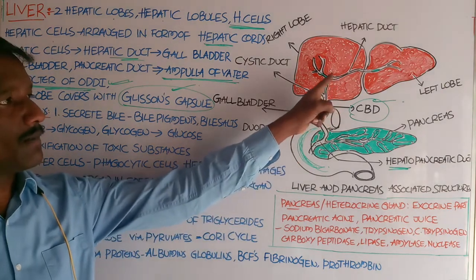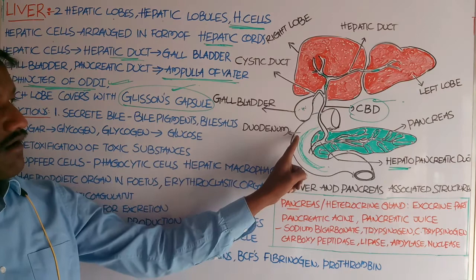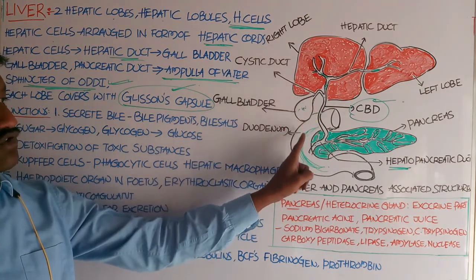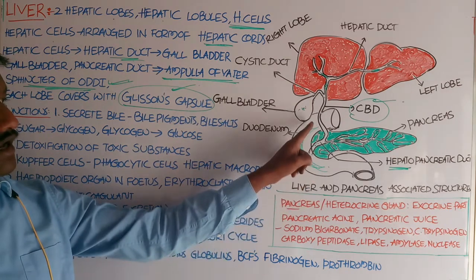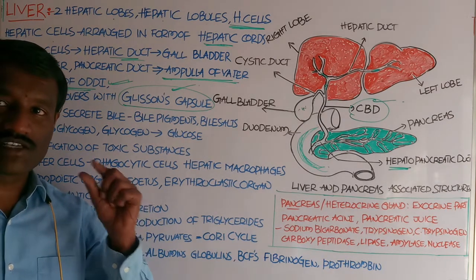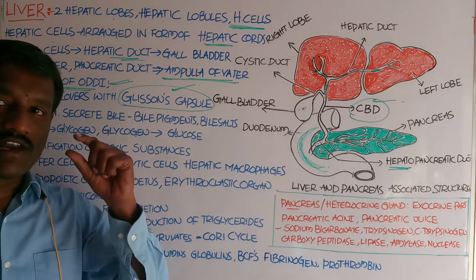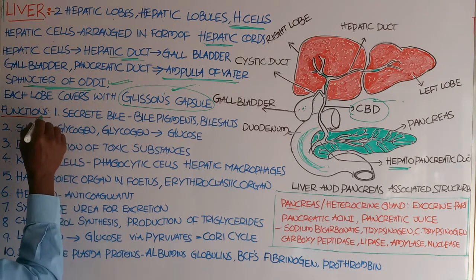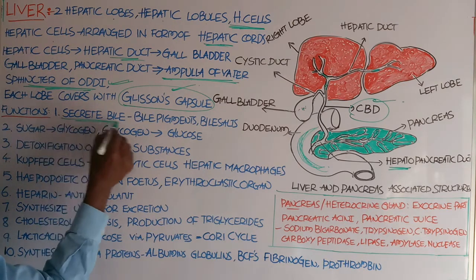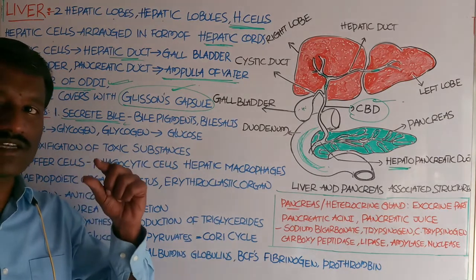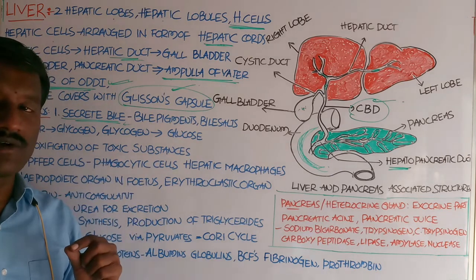This is a diagrammatic representation of the pancreas, liver, and associated structures including the duodenum and the gallbladder. Regarding the functions of the liver: the first and main function is the secretion of bile. Bile consists of bile salts and bile pigments.